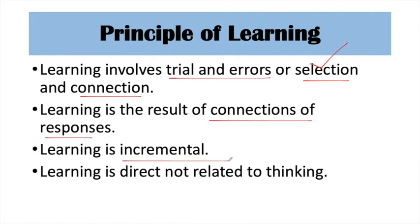The next principle is that learning is incremental. In learning there are many trials and errors, and the first time we can never be successful. As we try to solve a problem, we improve efficiency over time — that's why learning is incremental. The last principle is that learning is direct and not related to thinking. In the case of the cat, the cat didn't think; there was simply a drive to solve the problem, and it did many direct trials.